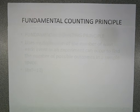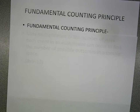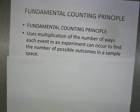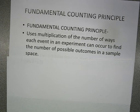This thing we're talking about today is called the Fundamental Counting Principle. So in your book, here's what they say: this uses multiplication of the number of ways each event in an experiment can occur to find the number of possible outcomes in a sample space. Use multiplication of the number of ways each event in an experiment can occur to find the number of possible outcomes in a sample space.